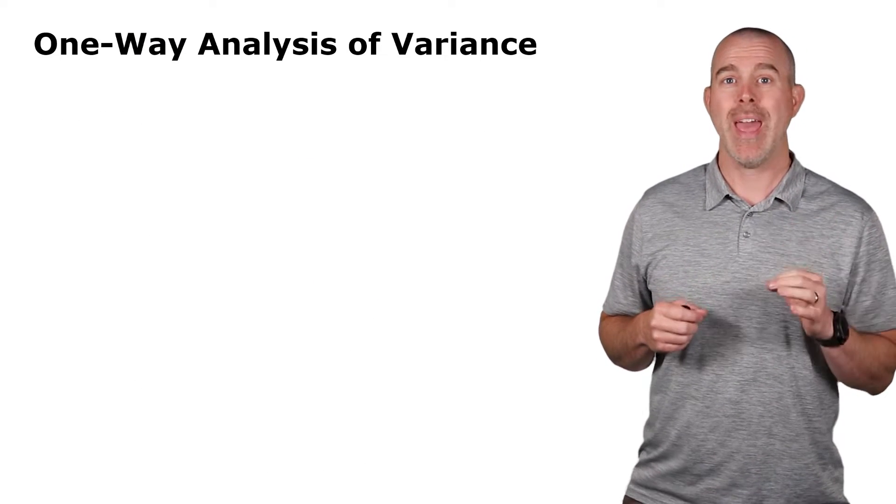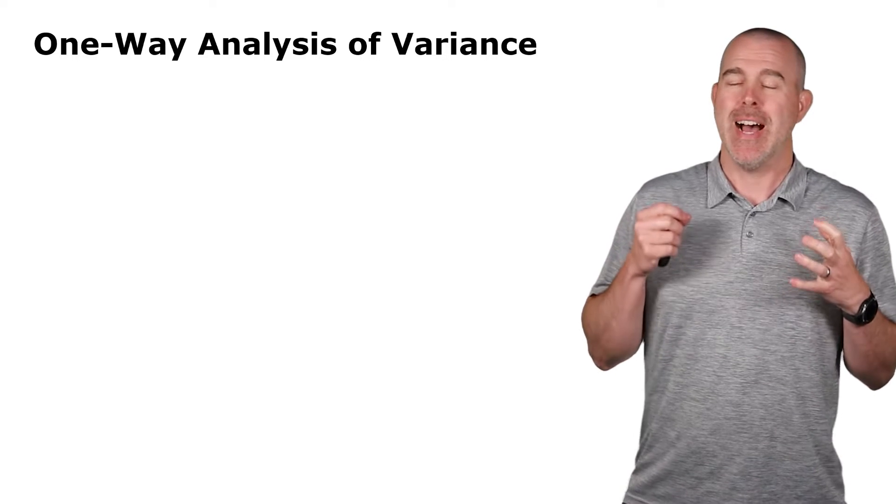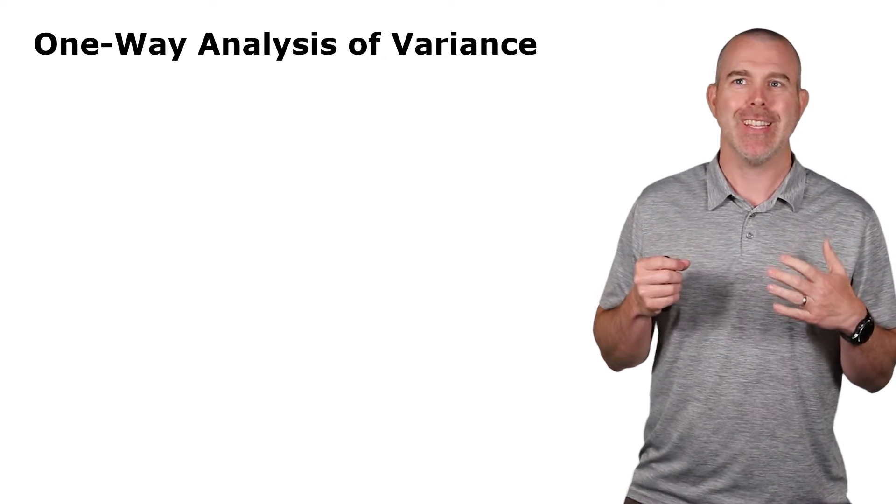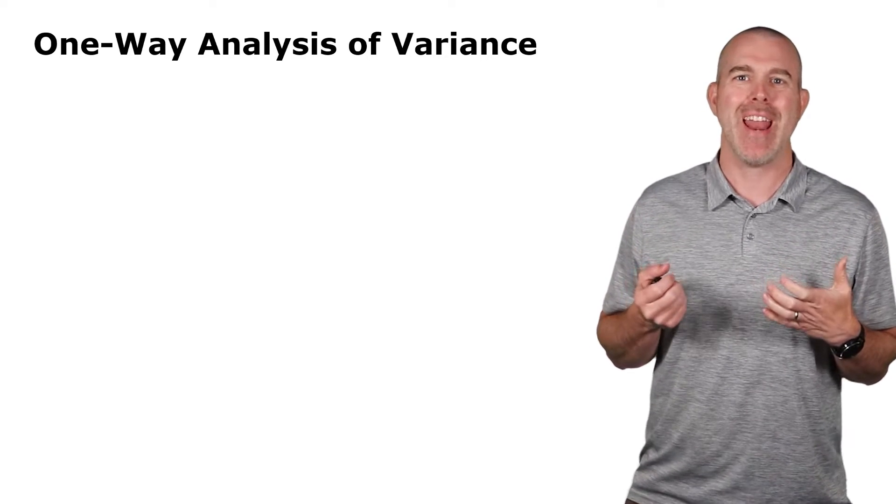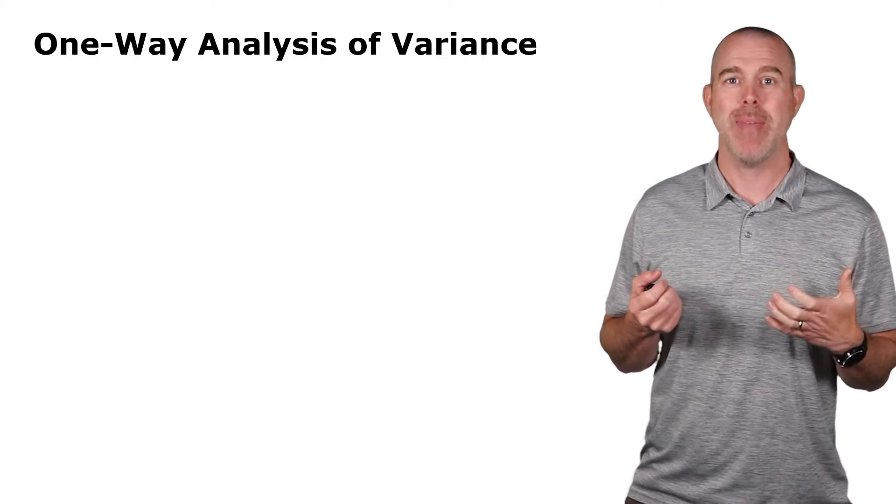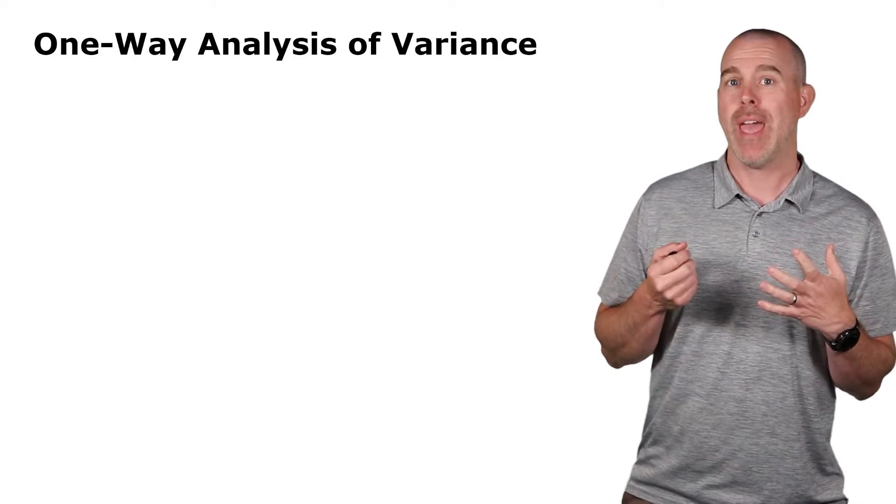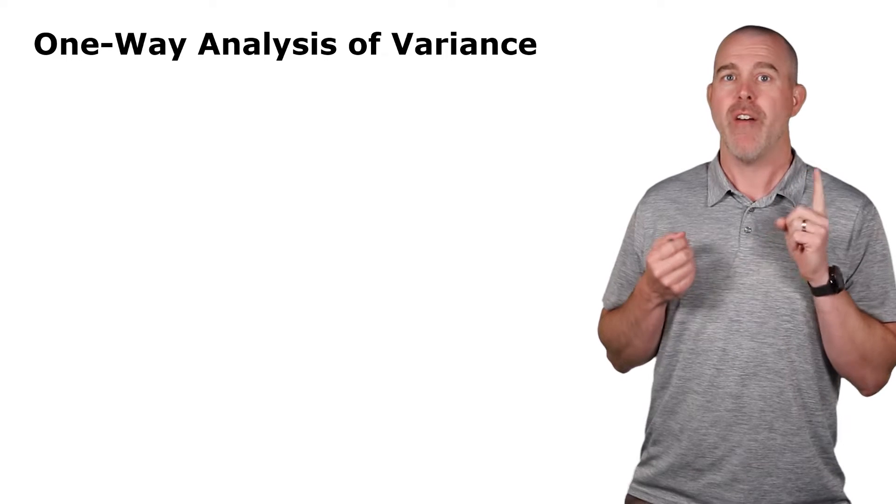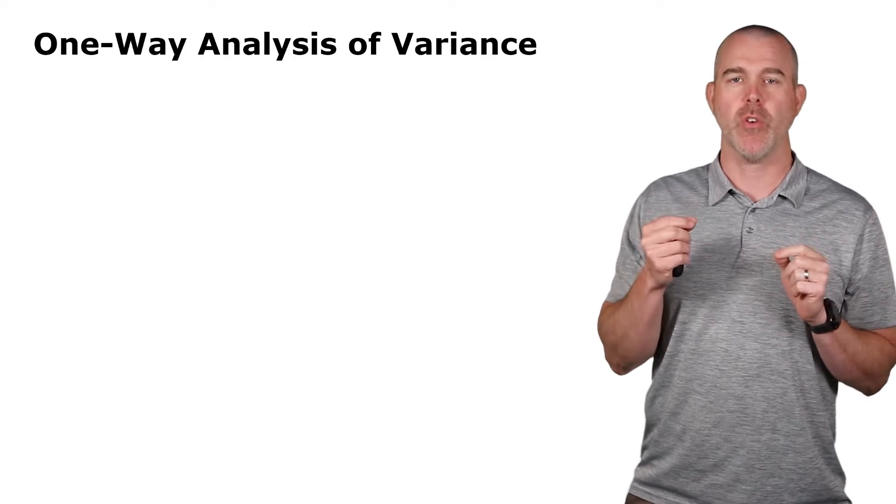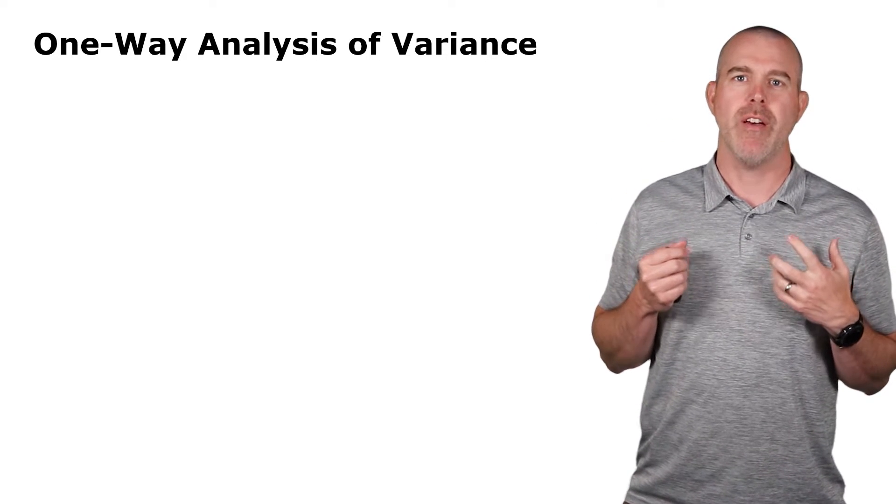The official title is One-Way Analysis of Variance. It's a little confusing here. We're not actually comparing the variance, we're comparing the means. It's called one-way in this case because we just have one factor. So we're going to look at different groups, one factor.